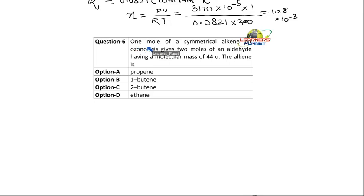One mole of a symmetrical alkene on ozonolysis gives two moles of an aldehyde having a molecular mass of 44 units. The alkene is giving two molecules of aldehyde.